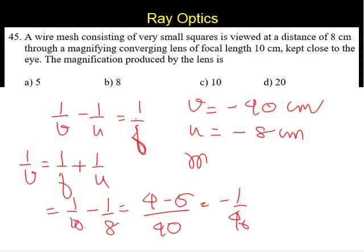Magnification M is equal to V by U. Because both are negative, we can say 40 by 8. So 5 times will be the magnification. The correct answer is A, 5 times.